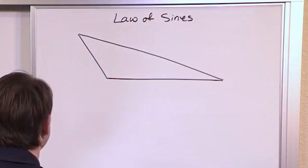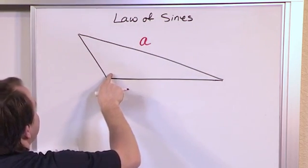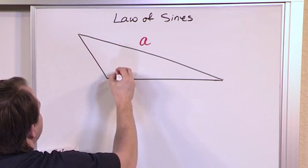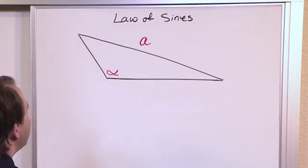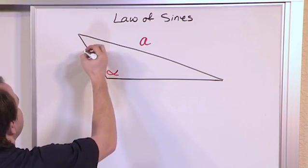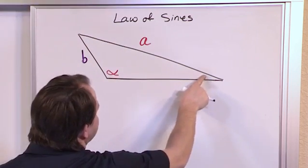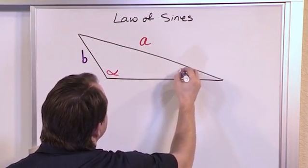So what I'm going to do is label this side, side a, and the angle that's opposite of side a, I'm going to label it angle alpha. That is angle alpha that you've probably seen at some point in your classes. I'm going to label this side, side b, and the angle that's opposite of side b, this one over here, I'm going to label it angle beta.